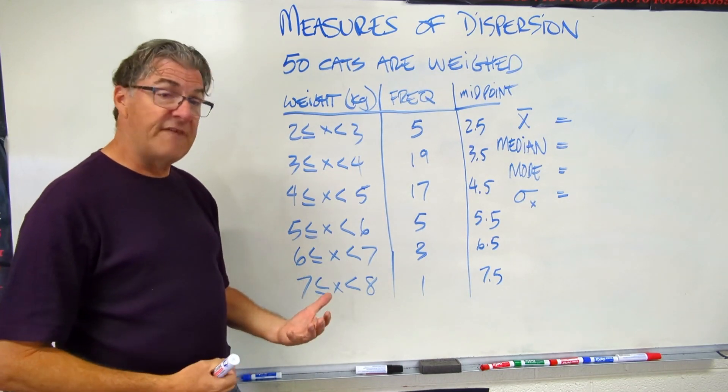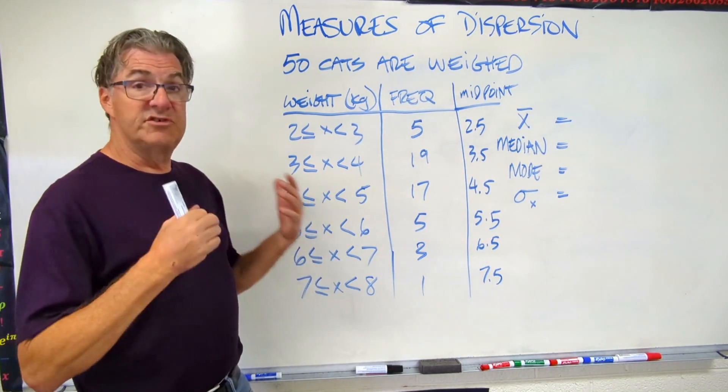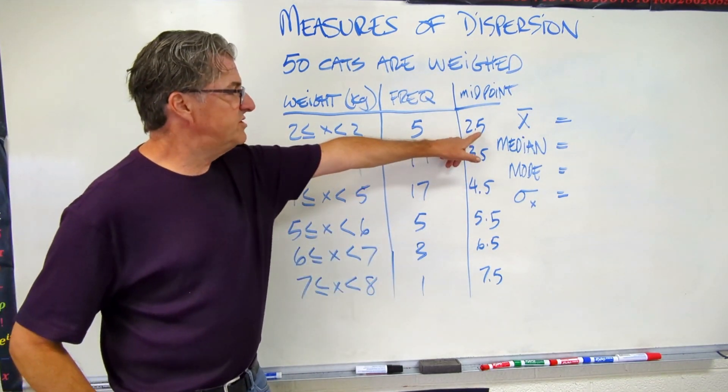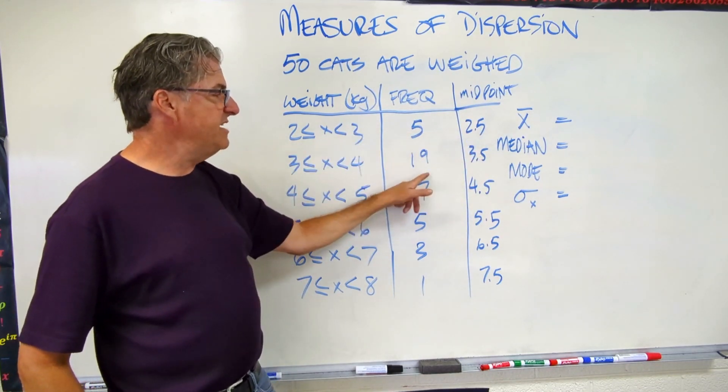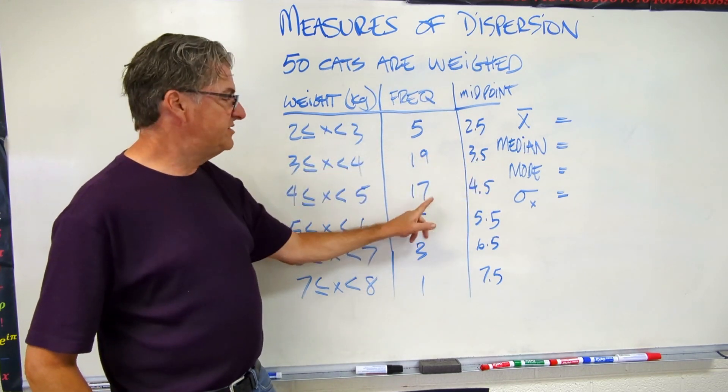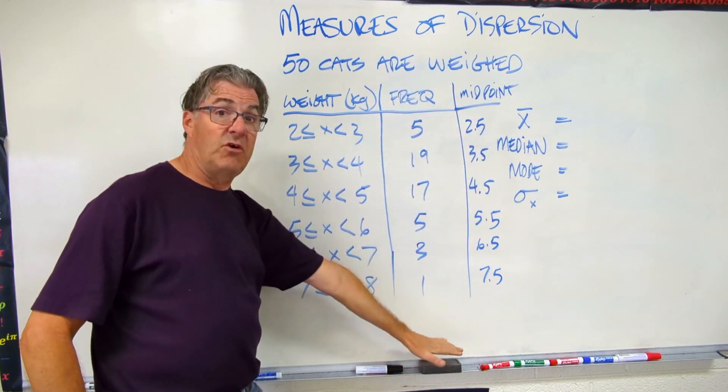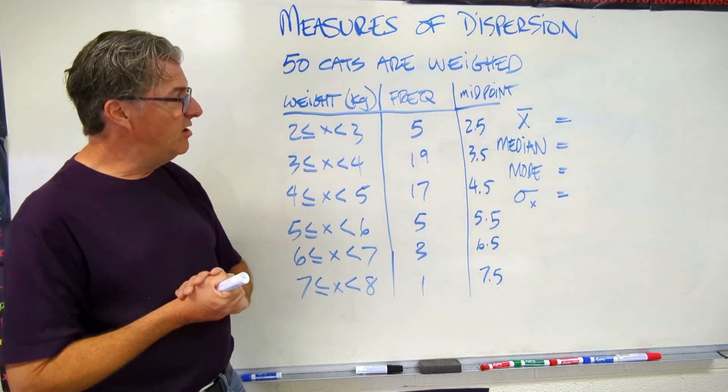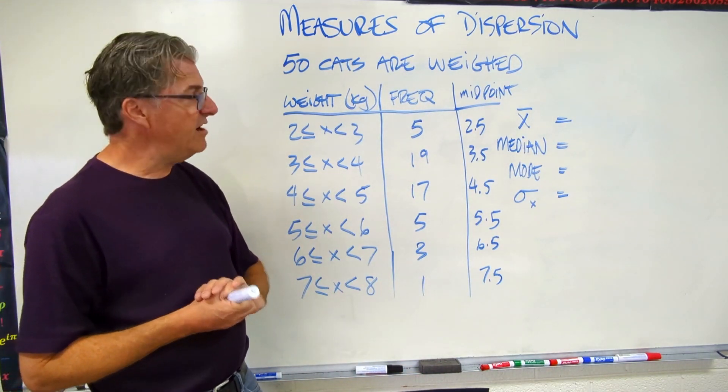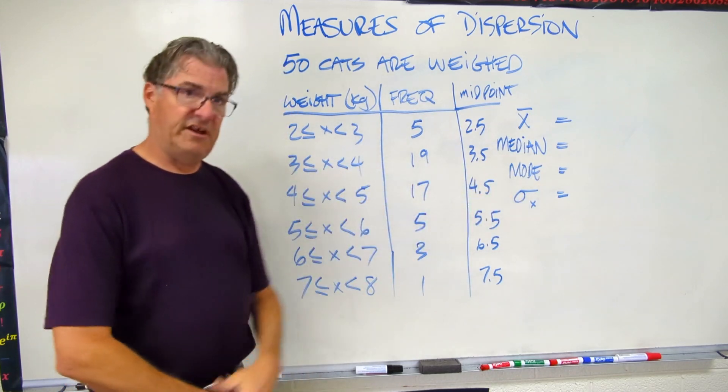So now, when you go into your graphing display calculator, you can use a frequency table, and you use this as your data point. So we have 5 weights at 2.5, 19 weights at 3.5, 17 at 4.5, and so on. Okay? So now, pause the video, get out your graphing display calculator, and find these four values. Let's see how you did.